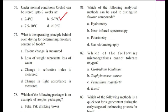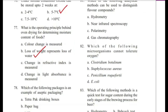Question 77: What is the operating principle behind oven drying for determining moisture content of foods? — Color change; loss of weight represents loss of water; change in refractive index; or change in light absorbance? Answer is B, loss of weight represents loss of water.